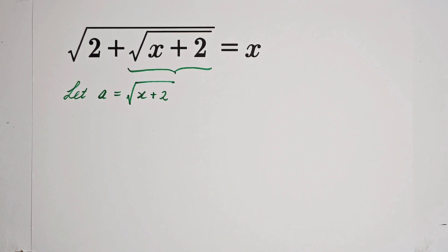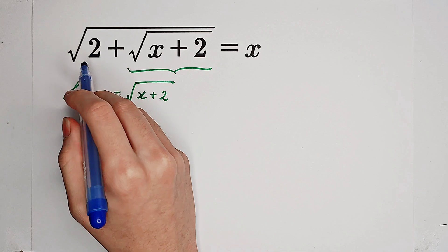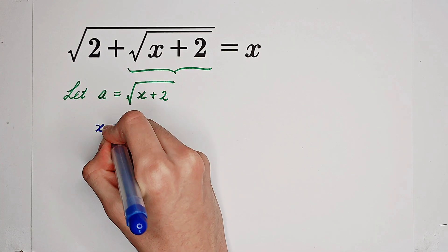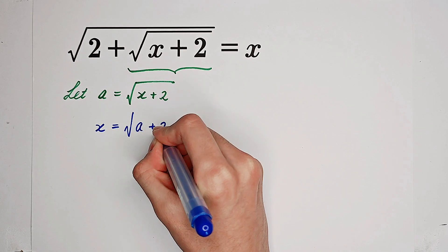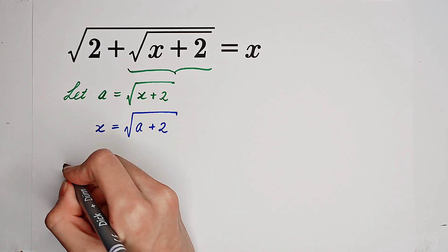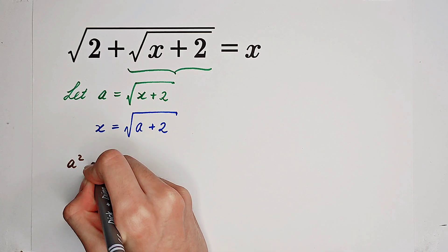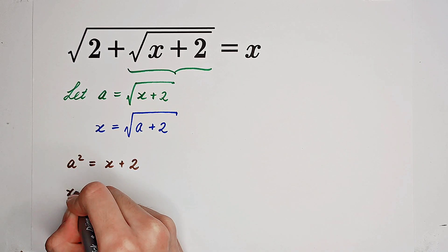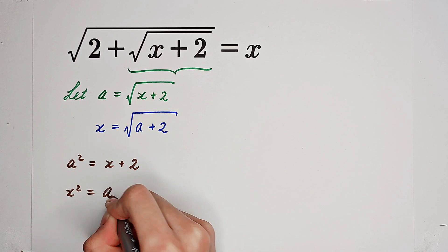So what do we get then? Then we get square root of 2 plus a equals x, so x equals square root of a plus 2. You can see that these two equations have the same form. So we can square both sides. We get a squared equals x plus 2 and x squared equals a plus 2.